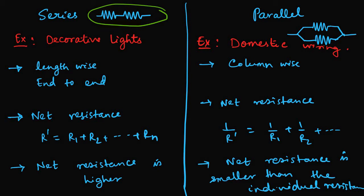In series combination, the decorative lights are combined end to end and that is actually called series combination. In domestic wiring there is parallel combination of appliances.